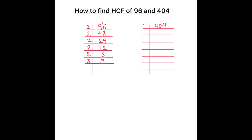Now let's divide 404. 404 is an even number, it is divisible by 2: 2 times 2 is 4, 2 times 0 is 0, 2 times 2 is 4. Again we can divide by 2: 2 times 1 is 2, 2 times 0 is 0, and 2 times 1 is 2. Now 101 is a prime number, it is not divisible by any number other than 101. So we will take 101 and divide it by 101: 101 times 1 is 101.